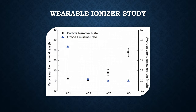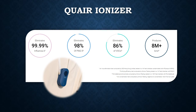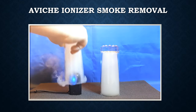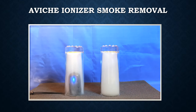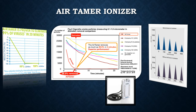Looking at specific products: the Wear ionizer has independent data showing it eliminates viruses, particulate matter, and volatile organic compounds. The Ion Ion ionizer removed all particulate matter in a 60-liter box in 10 minutes. A Vinci ionizer smoke removal test shows it working in the real world to remove smoke. The Air Tamer ionizer has independent data showing it removes viruses and smoke and reduces volatile organic compounds.